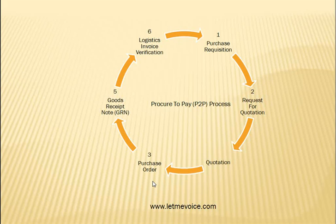Another type is the Stock Transport Order, or STO. Sometimes a company dispatches material from one plant to another plant. This is done by using document type UB to create a purchase order called a Stock Transport Order.